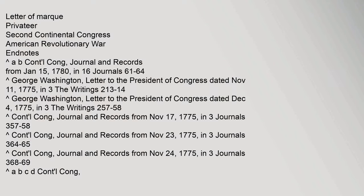See also: Federal Judiciary of the United States, prize court, prize law, Letter of Marque, Privateer, 2nd Continental Congress, American Revolutionary War. Endnotes: Continental Congress journal and records from January 15, 1780, in 16 Journals 61–64. George Washington, letter to the President of Congress dated November 11, 1775, in 3 The Writings 213–14. George Washington, letter to the President of Congress dated December 4, 1775, in 3 The Writings 257–58.